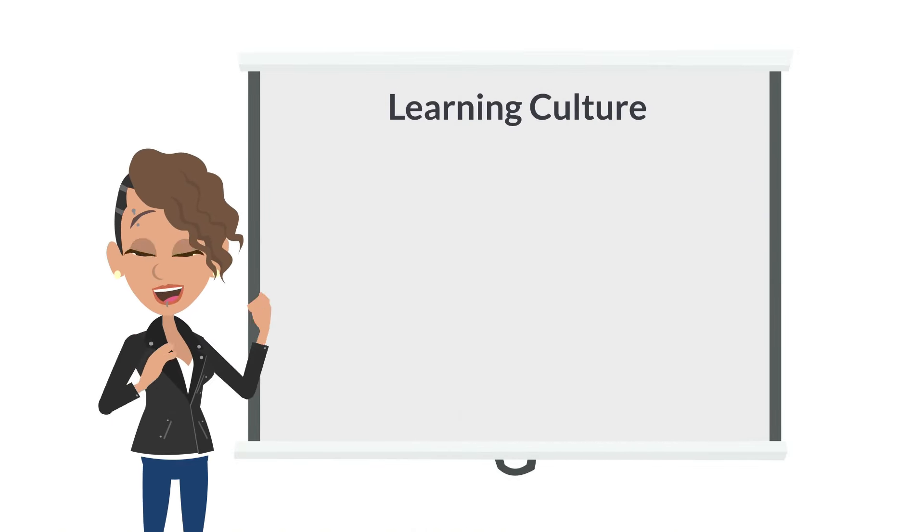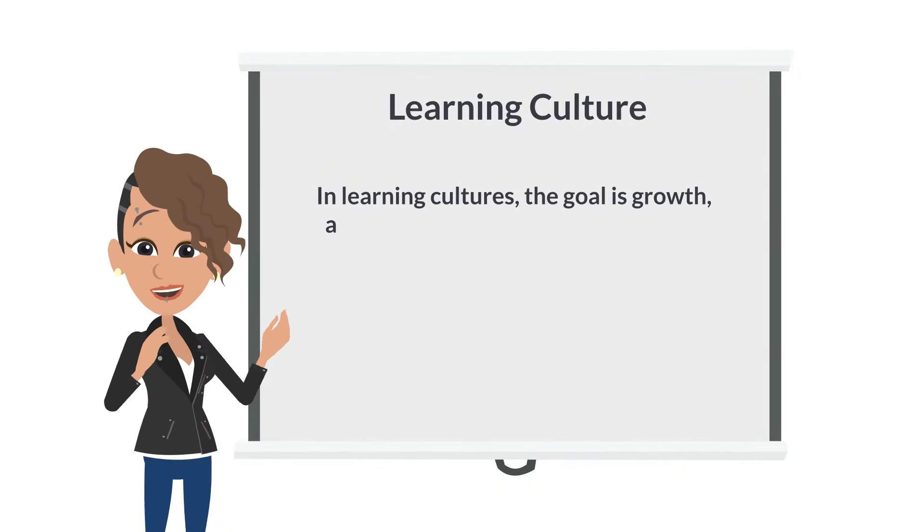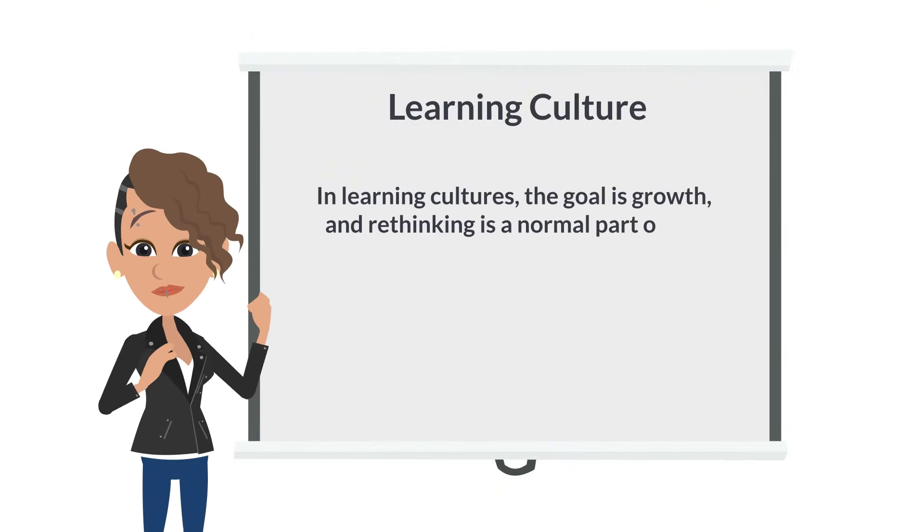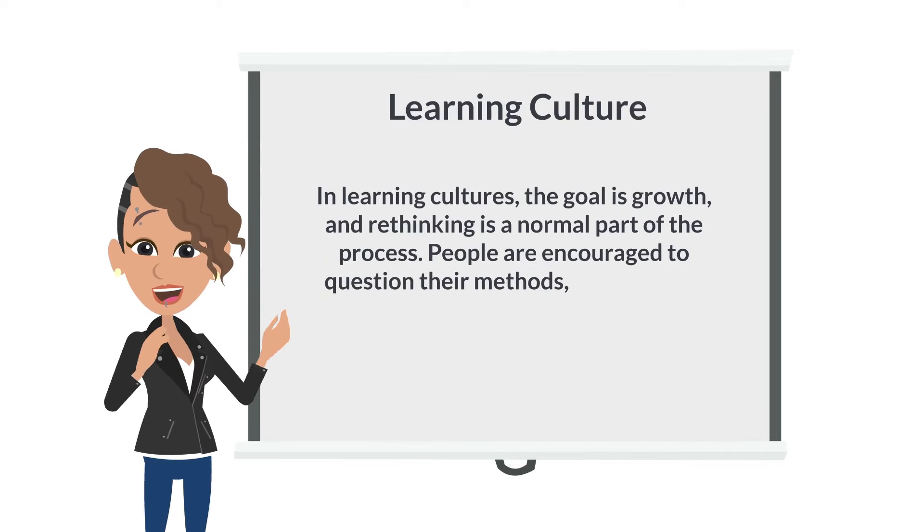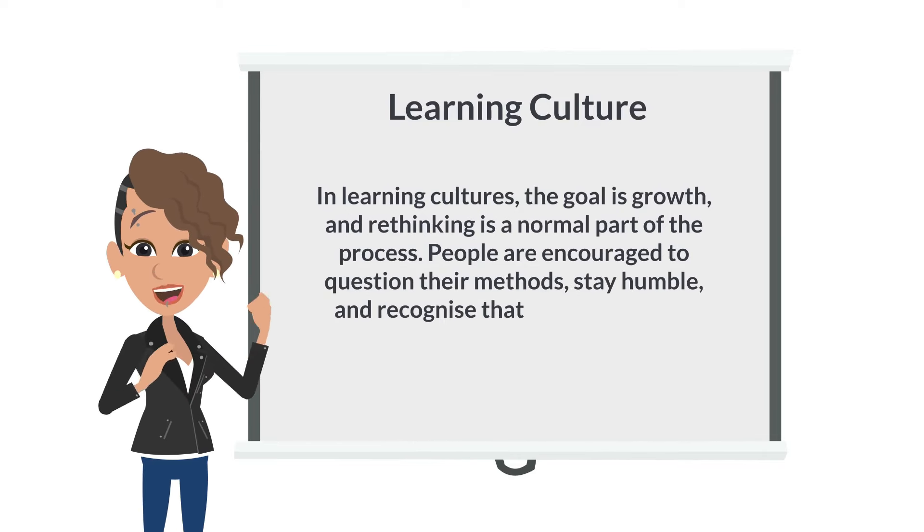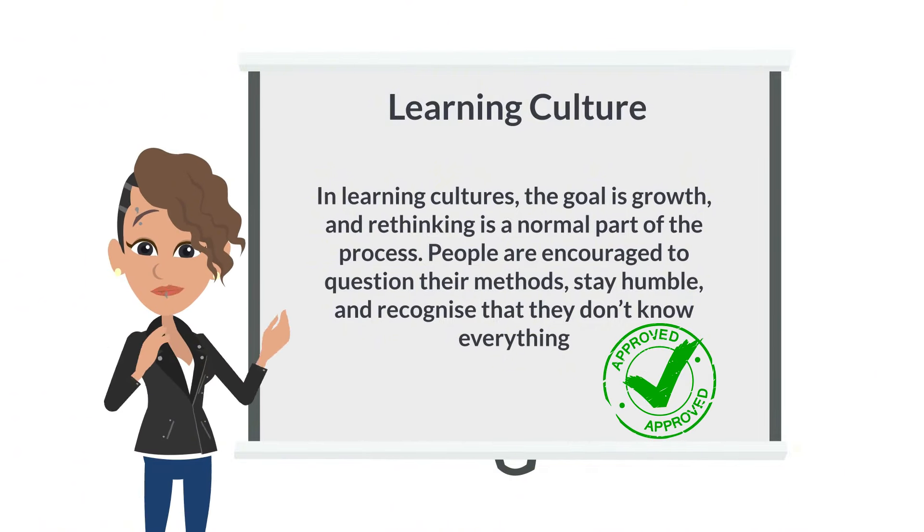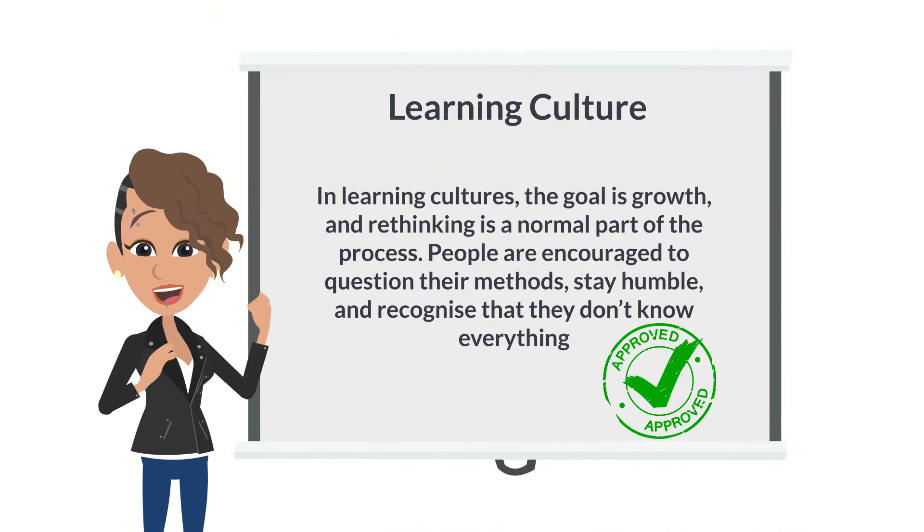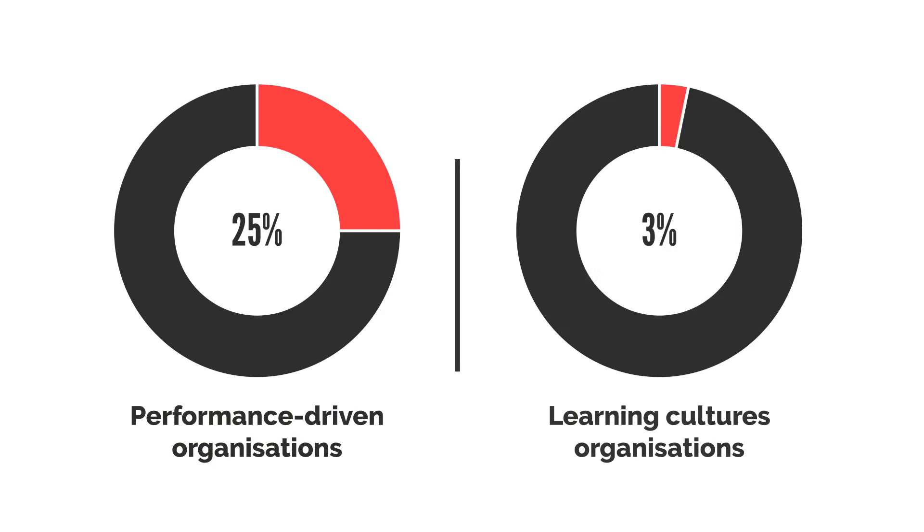For teams to be better at rethinking their choices, workplaces need to have a learning culture instead. In learning cultures, the goal is growth, and rethinking is a normal part of the process. People are encouraged to question their methods, stay humble, and recognize that they don't know everything. This prevents the kind of overconfidence that led to NASA's mistake. While you might think performance-driven organizations get better results, research shows that companies with learning cultures are more innovative and make fewer mistakes.